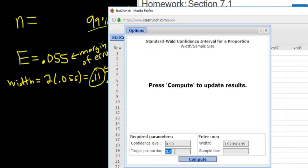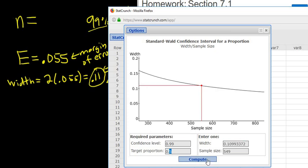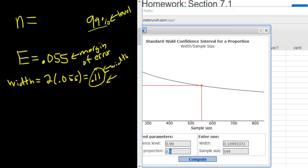Like if it told us 80% prefer aisle seats, then we would change it to 0.80, but nothing is known. The width is 0.11. Compute, so 549. So the answer to the first part is 549.